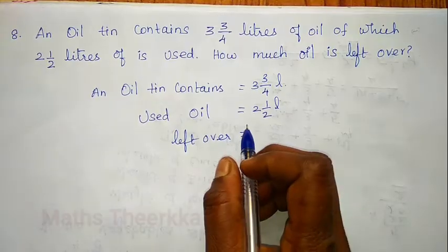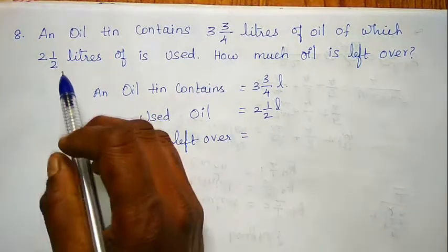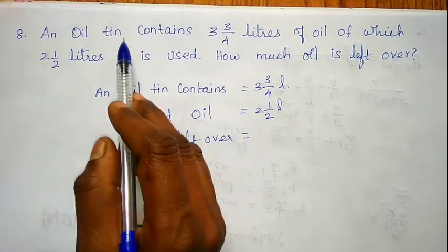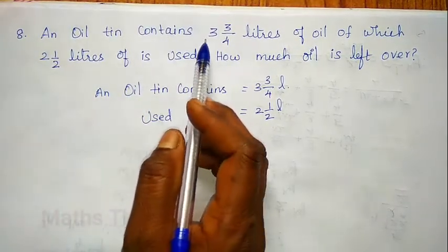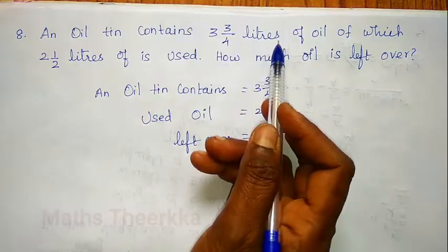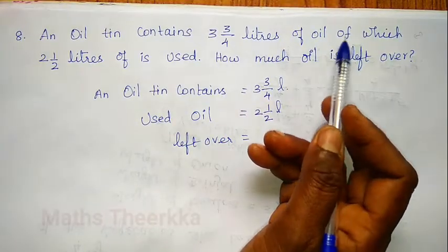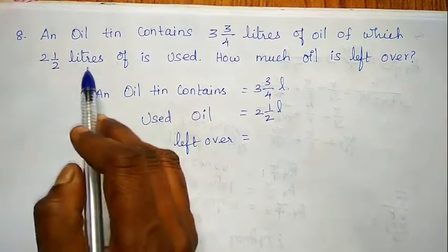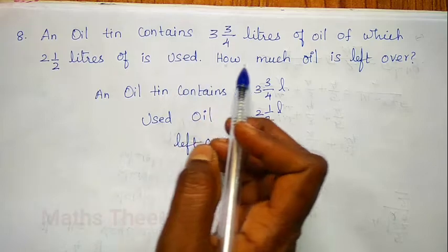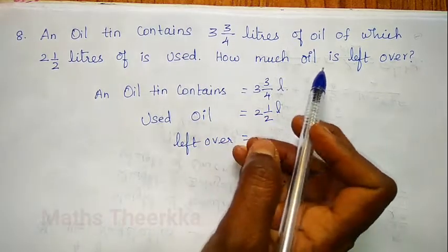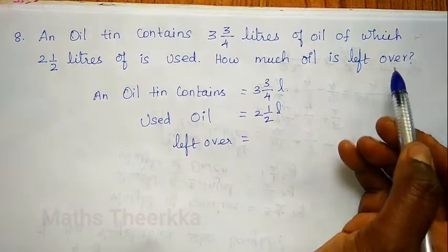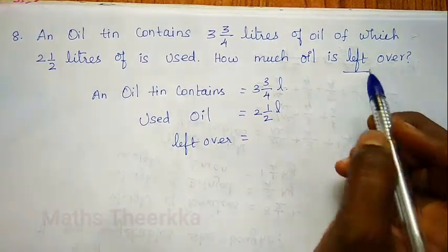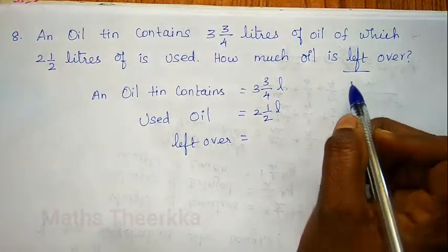Next exercise is 1.1.8. An oil tin contains 3 and 3/4 liters of oil. If 2 and 1/2 liters of oil is used, how much oil is left over? This requires subtraction.